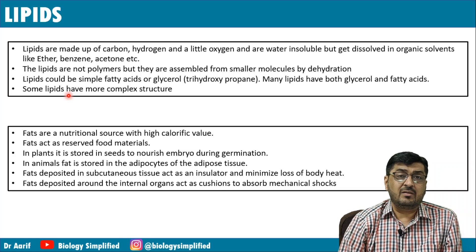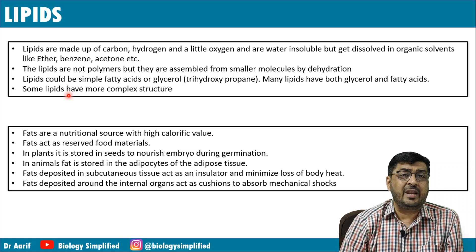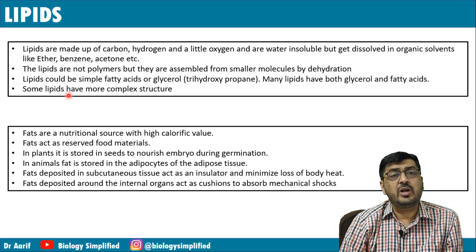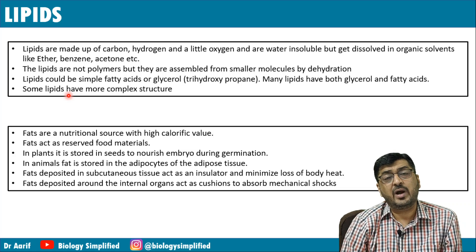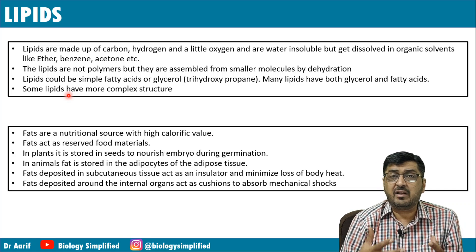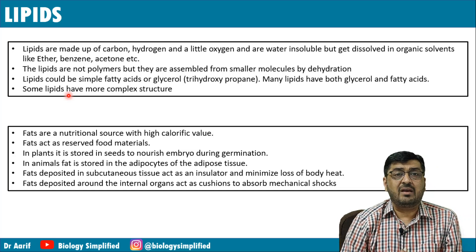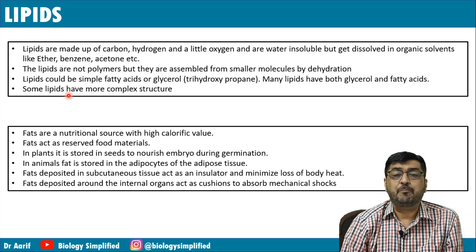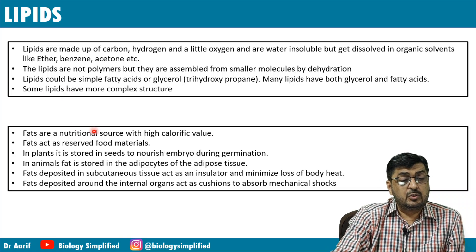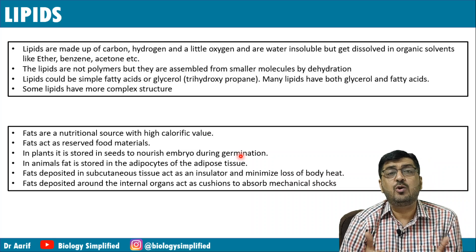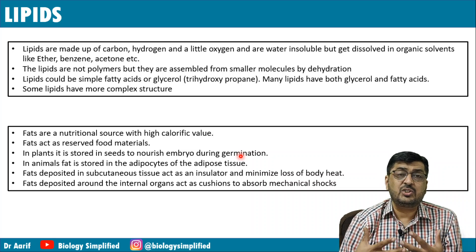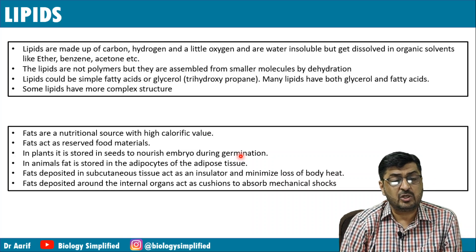Fats act as a reserve food material — they supply energy only when carbohydrates in the body are used up. You've already studied in the respiration chapter how carbohydrates, proteins, and fats are interconvertible via the Krebs cycle — the amphibolic pathway. In plants, fat is stored in seeds to nourish the embryo during germination, specifically as part of the endosperm.